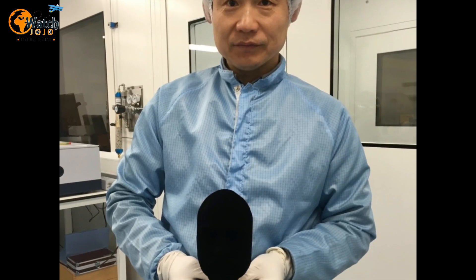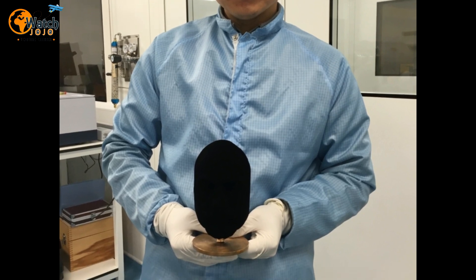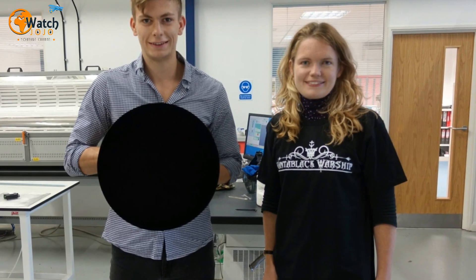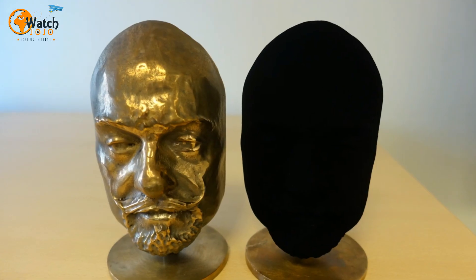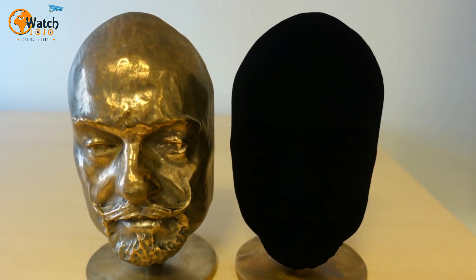To see how Vantablack can play with your mind, all you have to do is spray a 3D object with it. A normal black will still be able to reveal all the curves and corners of the object, but Vantablack makes a 3D object look completely flat.